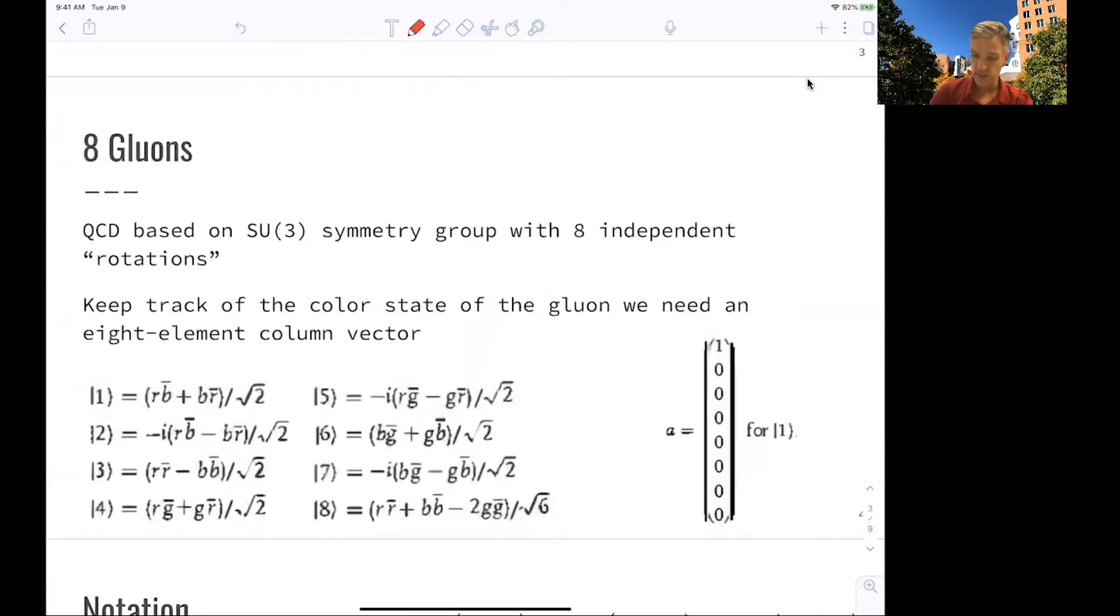If you want to keep track of this, we do this in this form. We have a vector of eight elements. And the gluon is one of those components. This is given here for this very first one.